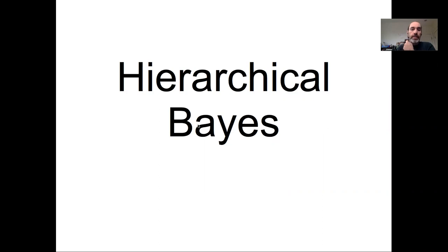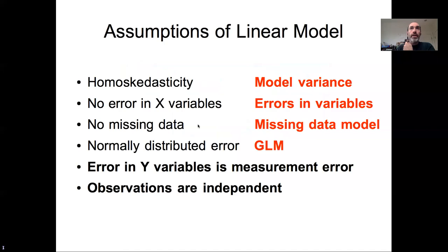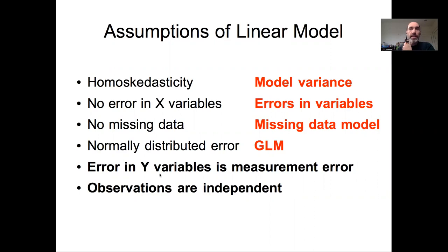In this video I'd like to begin introducing the concept of hierarchical Bayesian models. This continues a series of lectures talking about the assumptions of linear models. One of the reasons we're introducing hierarchical models is to allow us to partition sources of variability. Traditional regression models assume that all of the error in our y variables is just measurement error, but linear models help us partition that into multiple sources, such as distinguishing observation error from process error, and distinguishing different spatial and temporal scales of variability.